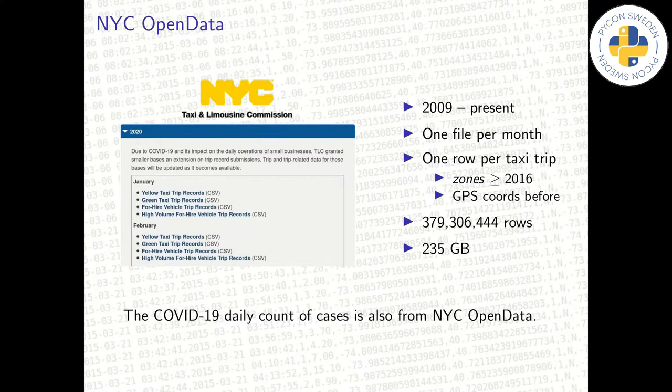There is one file per month and one row per taxi trip. Starting in 2016, locations are specified using a set of zones, and we use these zones to highlight where a taxi trip occurred on a map.